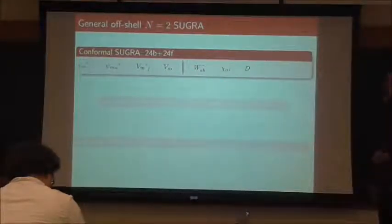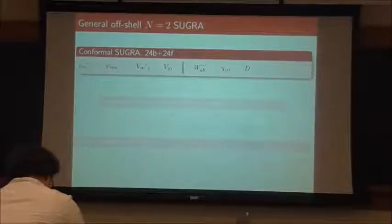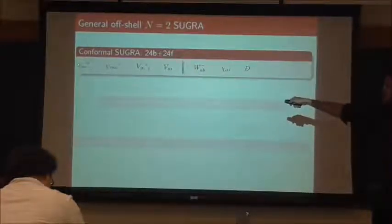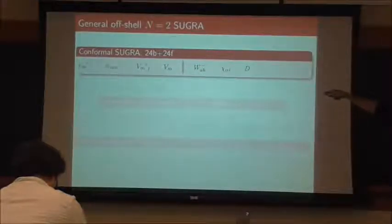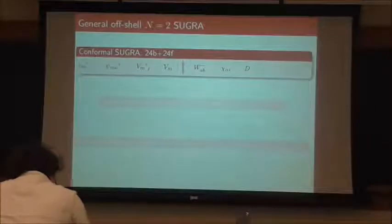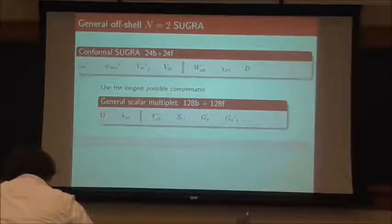For eight supercharges and fewer, there's a relatively simple way of answering that question. The idea is that a Poincaré supergravity theory can be thought of as a conformal supergravity theory coupled to some compensating multiplet. Conformal supergravity, thankfully, is unique. For N=2, its field content is 24 bosons and 24 fermions. In addition to your graviton and gravitino, you have an SU(2)_R gauge field and a U(1) gauge field, and then auxiliary fields of increasing dimension: an anti-self-dual tensor W_{AB}^-, a fermion χ, and a scalar D.